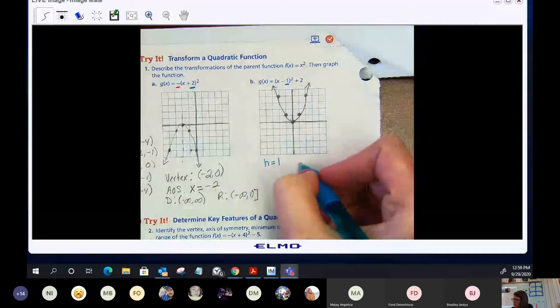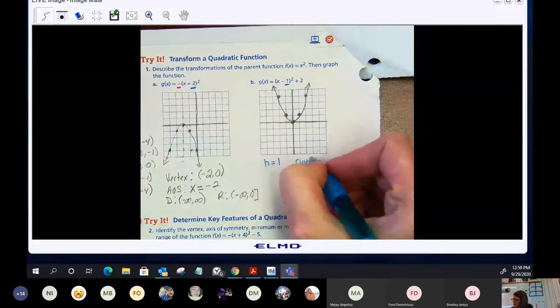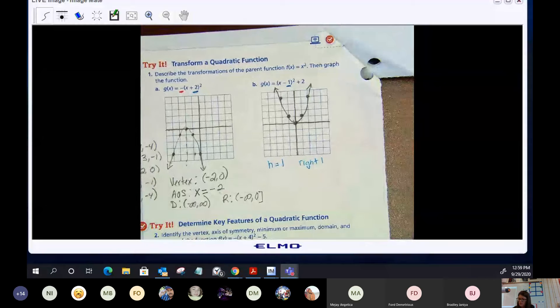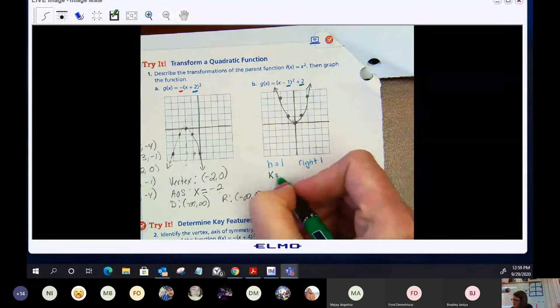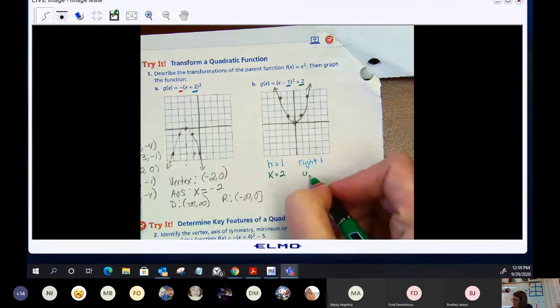Which means I'm going to go right one, one, two. And my k value is two, so that means I'm going to go up two.